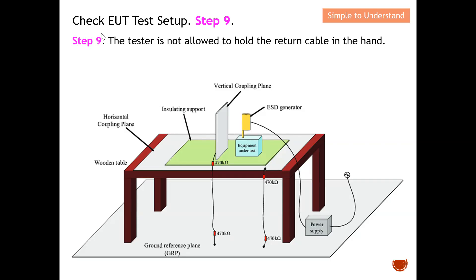Step number nine: the tester is not allowed to hold the return cable in the hand. It is a common habit to hold the gun in one hand and the cable in the other, but you are only allowed to hold the gun — not the return cable.